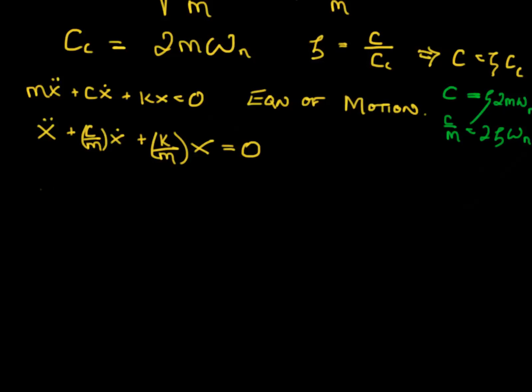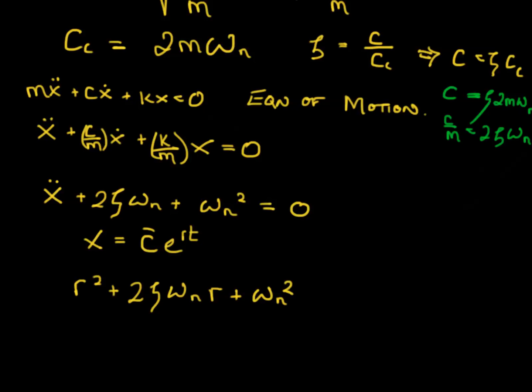So I can rewrite my equation of motion in this form as X double dot plus 2 zeta omega n X dot plus omega n squared X equals zero. When I then assume that X is of the form C bar E to the RT and plug it in, I'm going to end up with a characteristic equation that looks like R squared plus 2 zeta omega n R plus omega n squared equals zero.